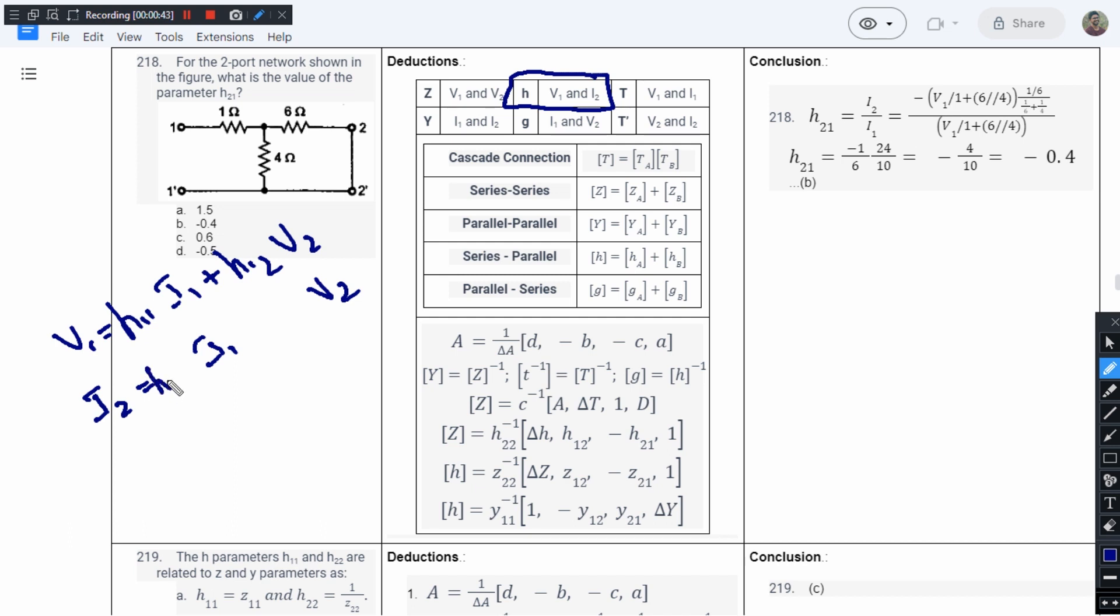This will be H21I1 plus H22V2. So these are the H parameters and we have been asked to find this parameter H12.